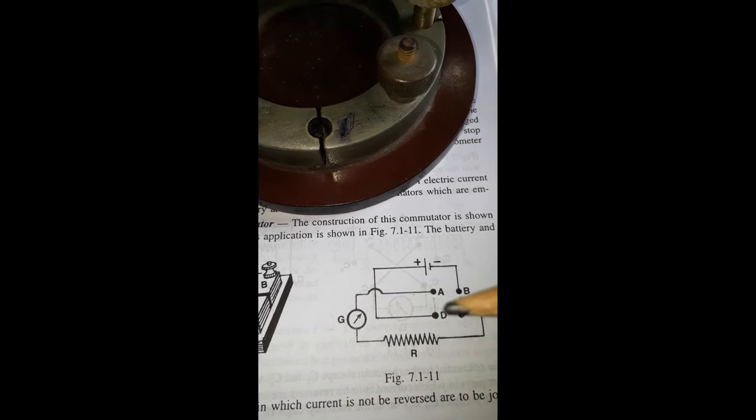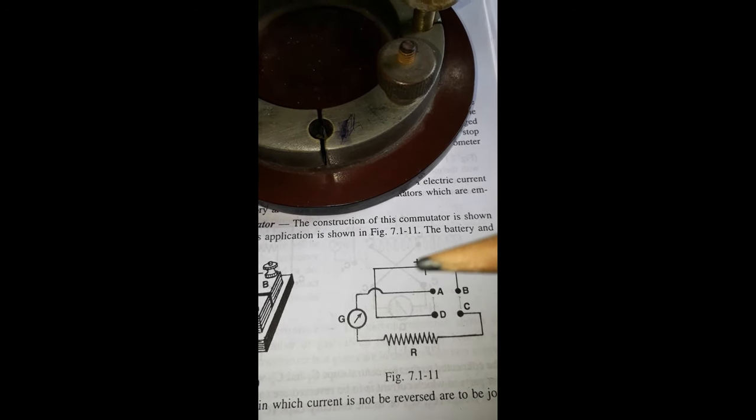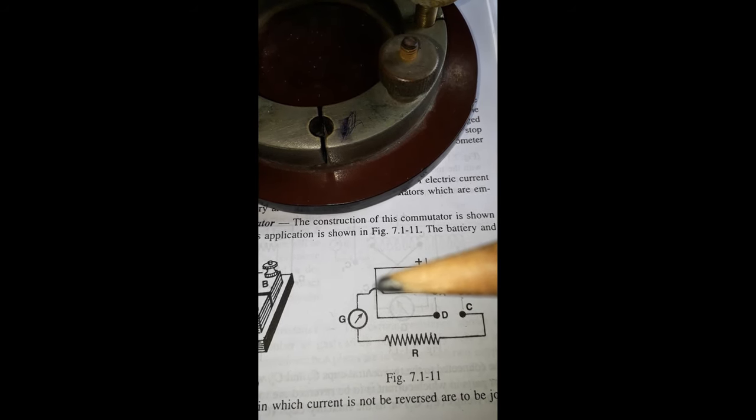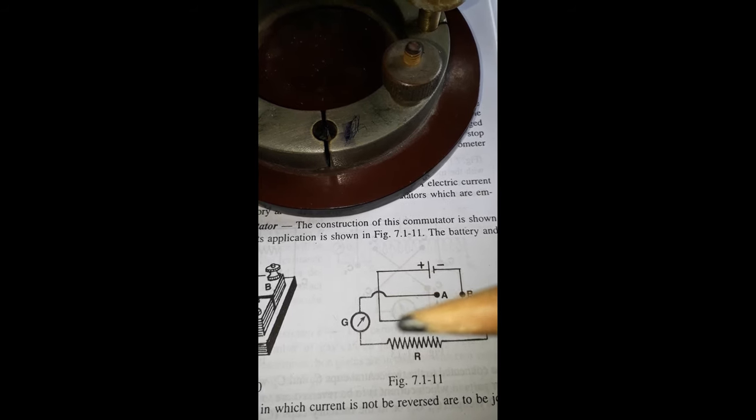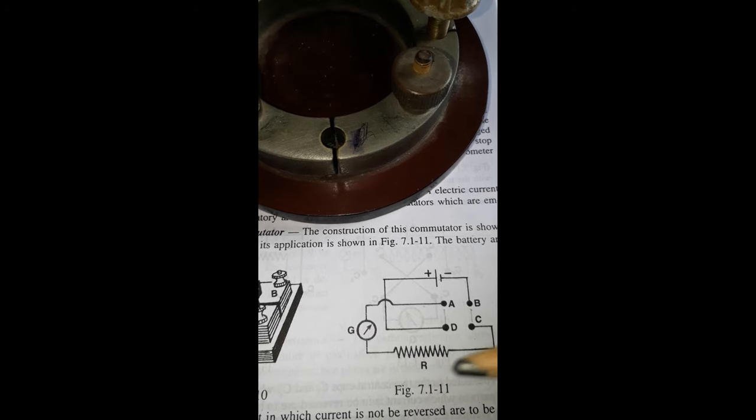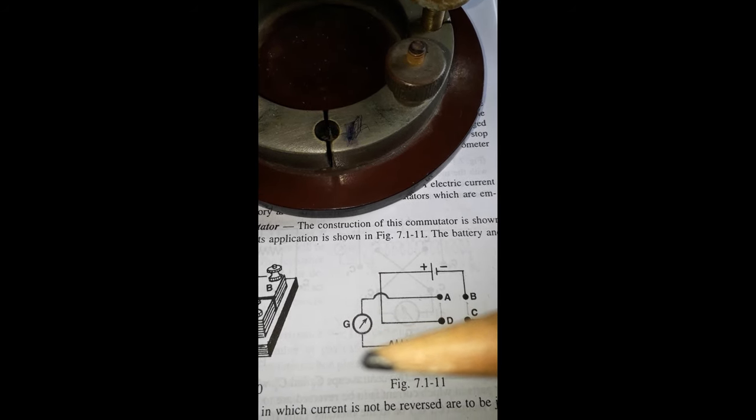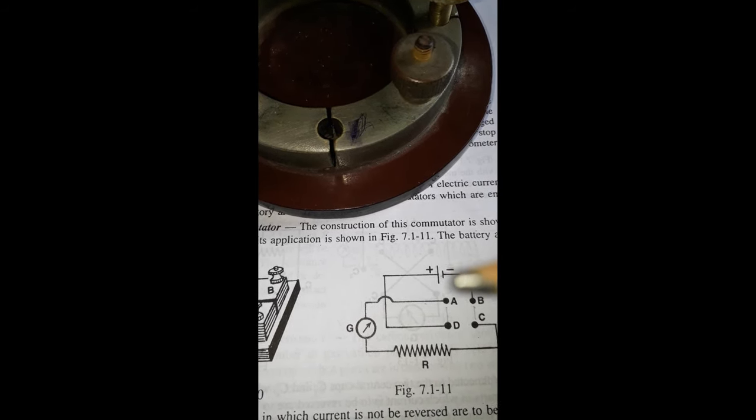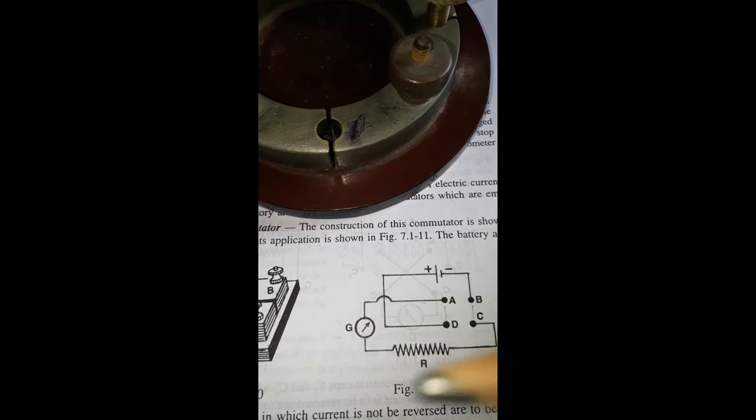Then current goes from the positive terminal in this direction, from D to C, then through the resistance and galvanometer from lower side to upper side, then from A to B, and completes at the negative terminal.